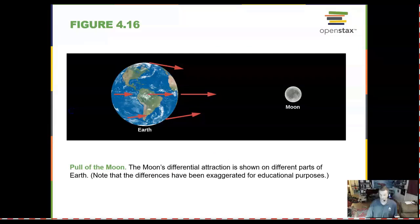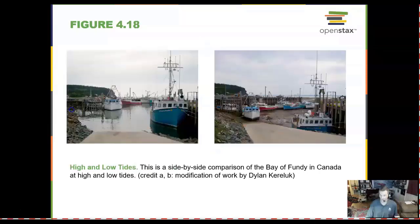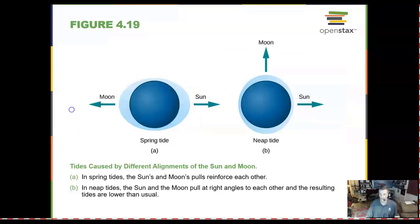The pull of the moon has an effect on tides and the water on Earth. As the Earth and moon orbit, we can have different tidal changes, with a little effect from the sun as well. Here we have a side-by-side comparison of high and low tides in the Bay of Fundy in Canada — quite dramatic. We can also have different kinds of tides depending on where the Earth, Sun, and Moon are located.